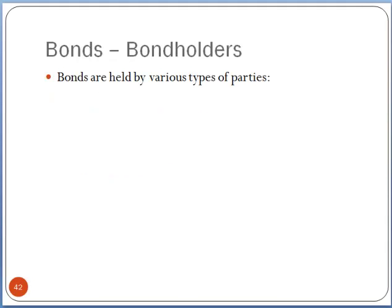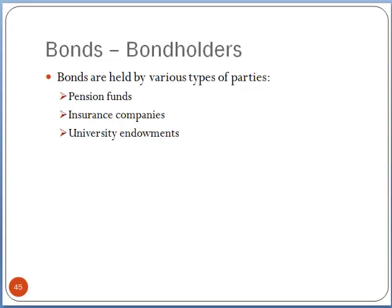Now who are the bond holders? There are a variety of people who hold bonds. Pension funds — you buy bonds typically when you're trying to preserve long-term value. Pension funds want to preserve value over long periods of time. Insurance companies want to save for that rainy day when they have to make payments. University endowments are large buyers or holders of bonds. There are bond funds. Individuals might buy bonds, and so on.